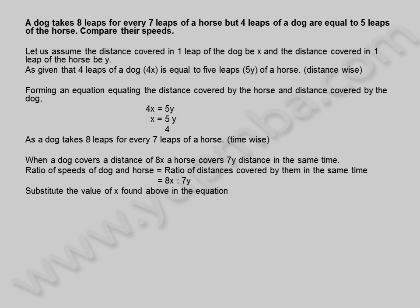Substitute the value of x found above in the equation: 8 into 5y by 4, is to 7y. The ratio of speeds of a dog and horse is 10 to 7.